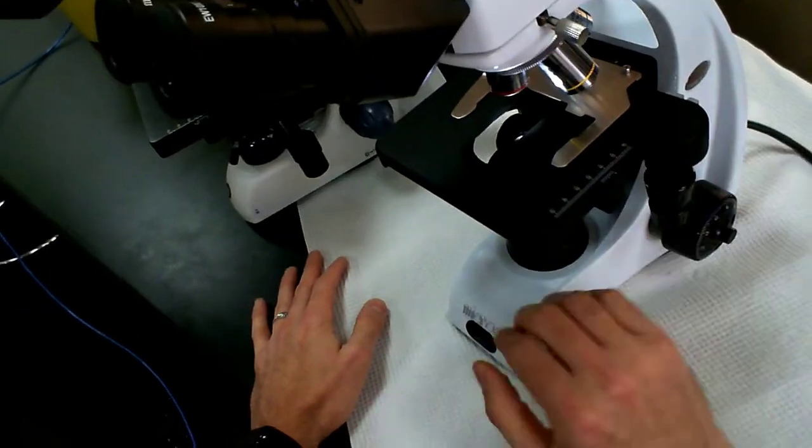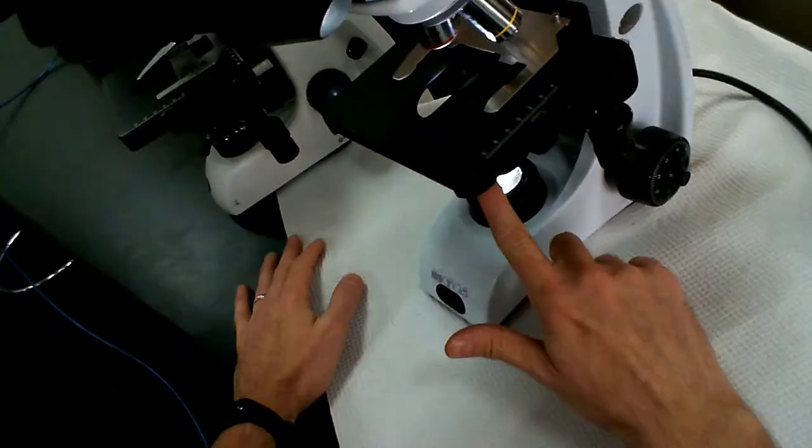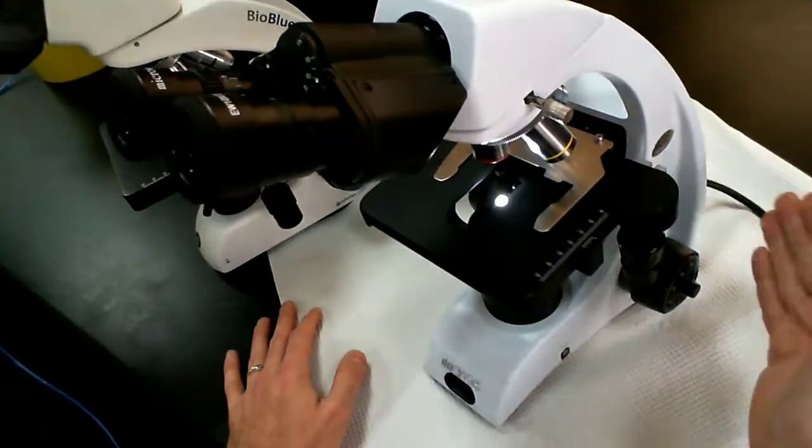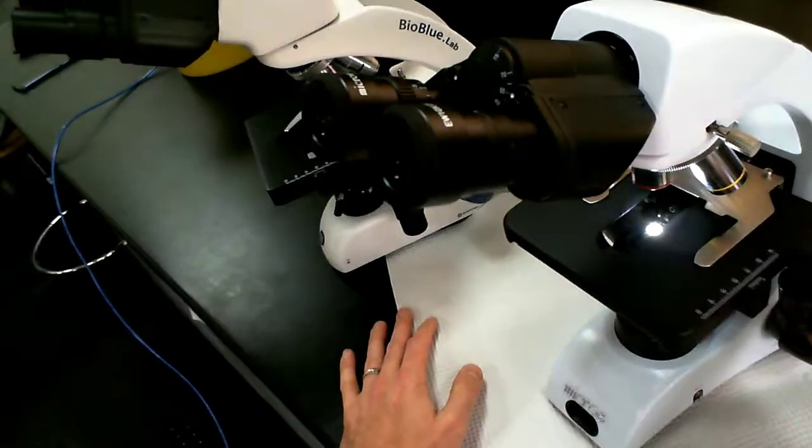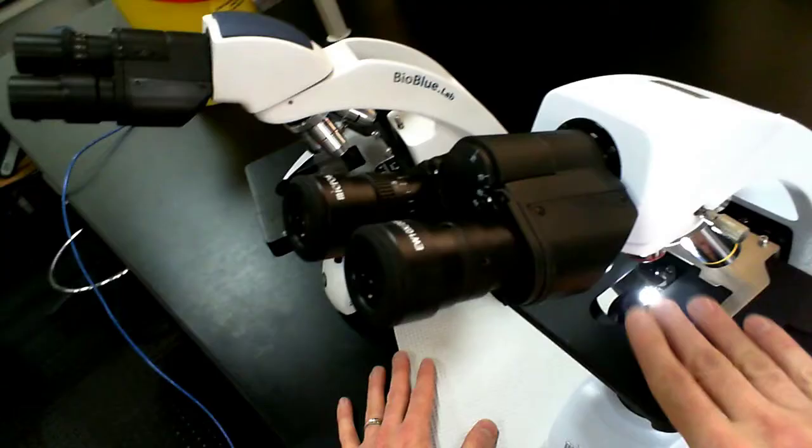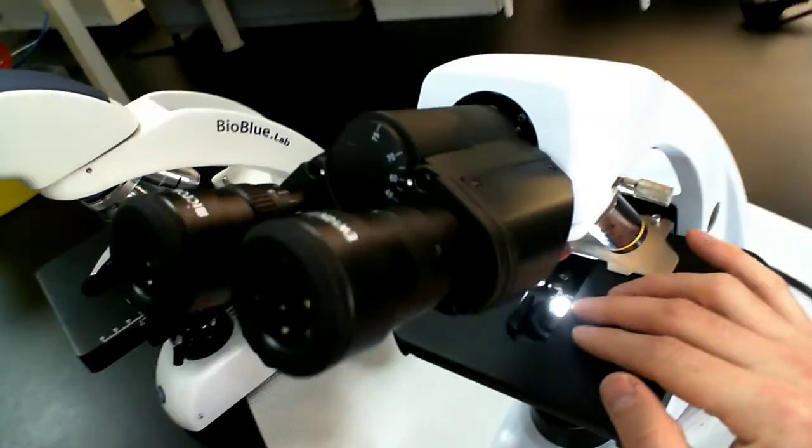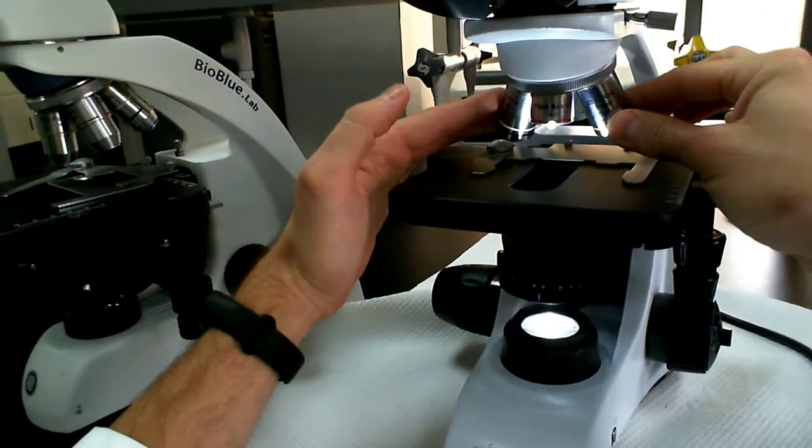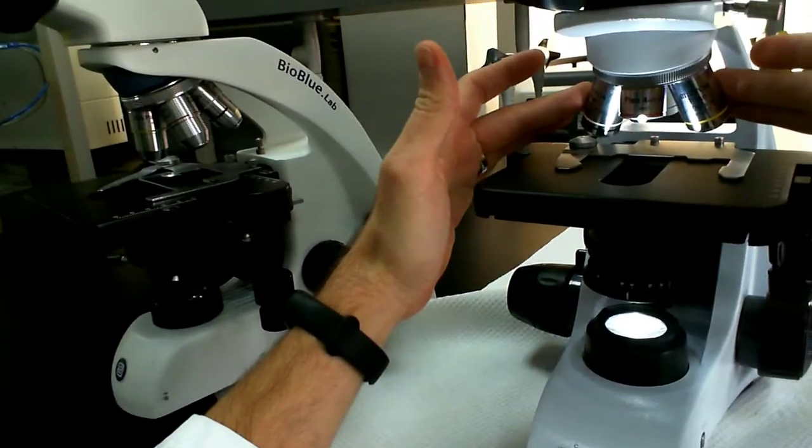So again, so far we have the light source. We have the condenser lens assembly, we have the stage, we have a stage clip, and we have stage controls as well as a coarse and fine focus on the side of the microscope. Now as we move above the stage, what we have here, let me try to get down, is a set of objective lenses.